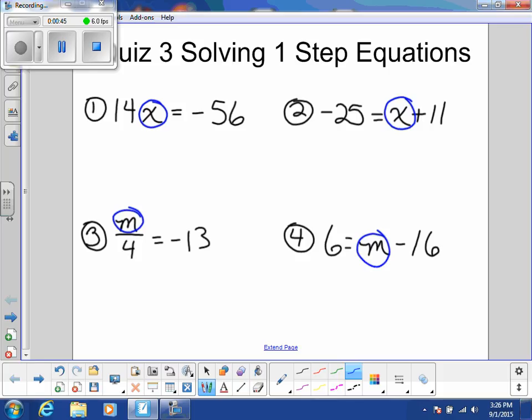Alright, the first equation, 14x, where your coefficient is 14 next to the variable x, it means 14 times x. I need to do the inverse of 14 times x. The inverse of multiplication is division, and I can divide by 14. As long as I do exactly the same thing to both sides, if I divide by positive 14 on the left, I have to divide by positive 14 on the right also.